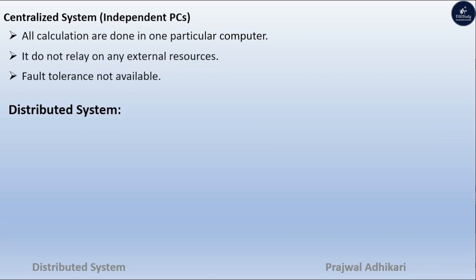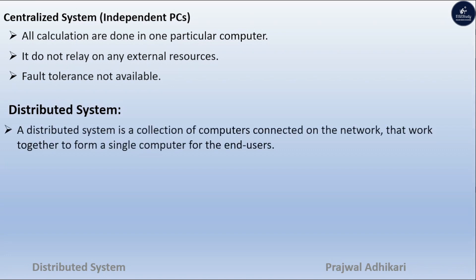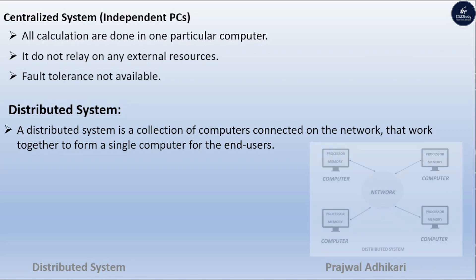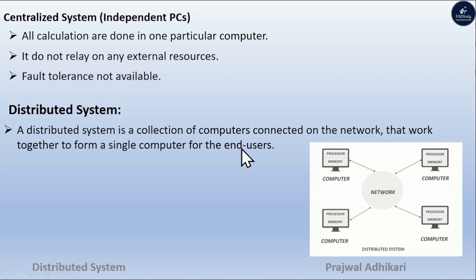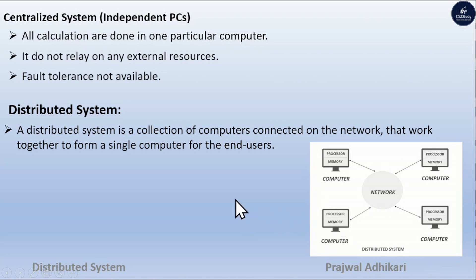Distributed systems: A distributed system is a collection of computers connected on the network that work together to form a single computer for the end user. Here is a simple diagram of distributed systems where four computers are connected within the network so that they can share their files within different devices.